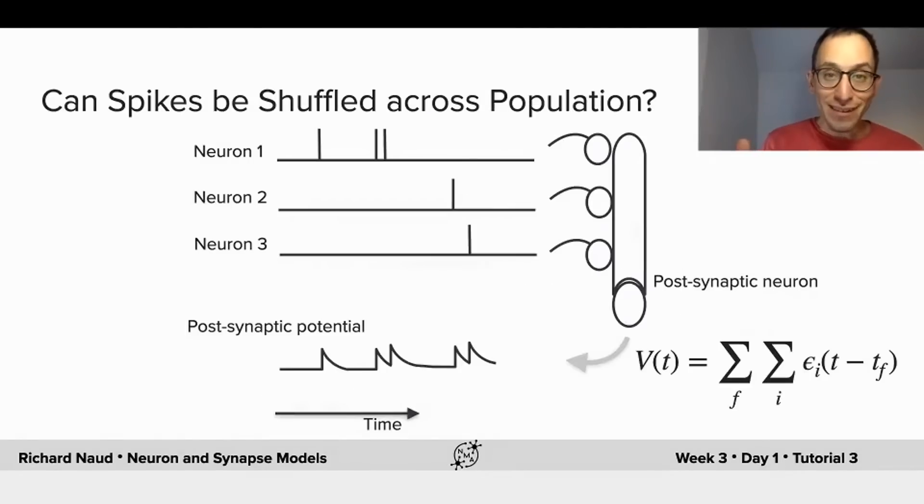But wait a second! Is that true? If that were true, it would mean that I can interchange the order of the sum, meaning that I could take those spikes from the other neurons and make them fired from the first neuron. If that's really how synaptic communication works, there would be no change to the postsynaptic membrane potential, and those two scenarios would be completely equivalent.